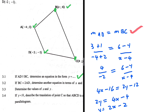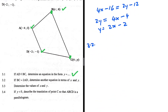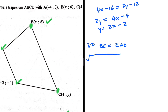Now 3.2: if BC = 2·AD, determine another equation in terms of x and y. So BC is our line and it is apparently 2 times AD. We'll use the distance formula here. We need to calculate the length of BC: taking B as the second point, y₂ = 6, y₁ = y, squared, plus x₂ = x minus x₁ = −4, squared.